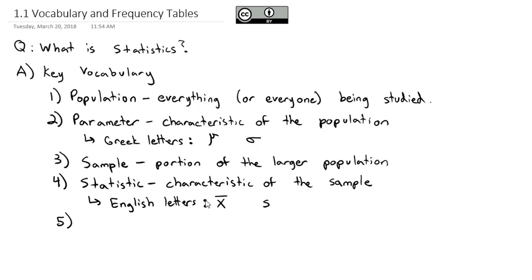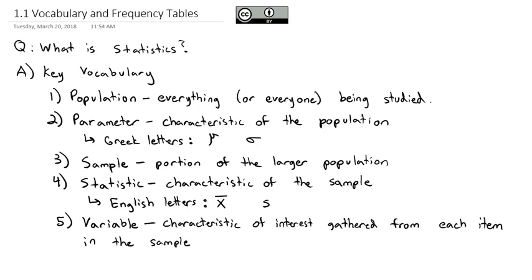So as we're looking at statistics of samples, which hopefully will estimate the parameter of a population, we're also interested in what are called variables. And these are not the variables of algebra. A variable is any characteristic of interest gathered from each item in the sample. Another way to think about the variable is, it's really, when I'm conducting a survey, it's really the question that is being asked.